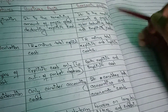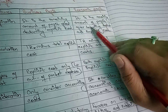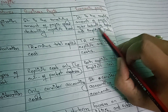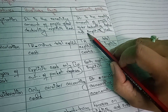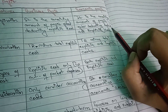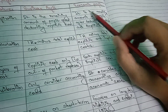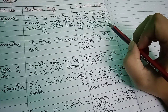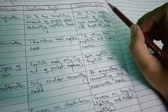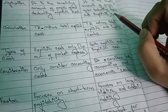What is the economic profit? It is the remaining amount of profit after deducting both explicit cost and implicit cost.